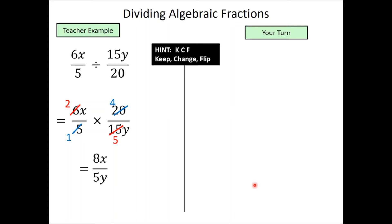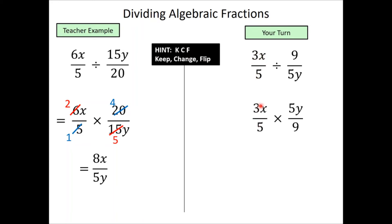Pause the video and try this question. Once you've got your answer, play the video and I'll go through it. For this question, remember keep change flip. We keep 3x over 5 the same, change the sign, flip the fraction upside down, then start cancelling. The 3 and 9 cancel to give 1 and 3. The two 5s cancel, both leaving 1. So we're left with xy on the numerator and 3 on the denominator. Final answer: xy divided by 3.